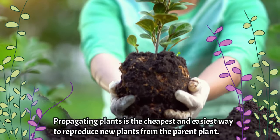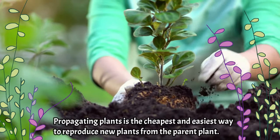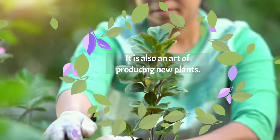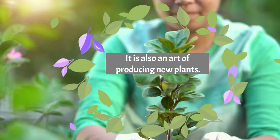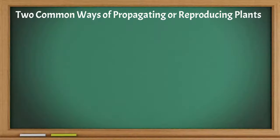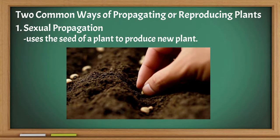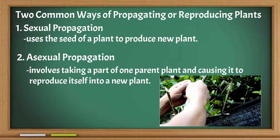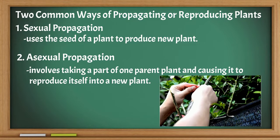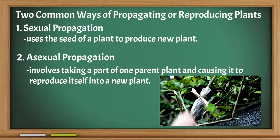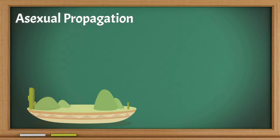Propagating plants is the cheapest and easiest way to reproduce new plants from the parent plant. It is also an art of producing new plants. There are two common ways of propagating or reproducing plants: sexual propagation, which uses the seed of a plant to produce a new plant, and asexual propagation, which involves taking a part of one parent plant and causing it to reproduce itself into a new plant.